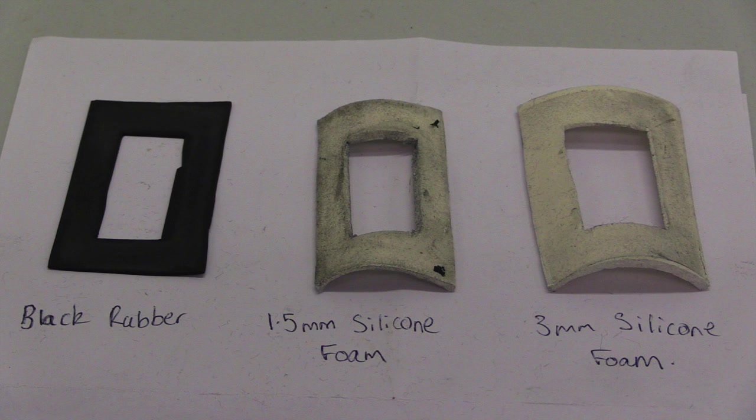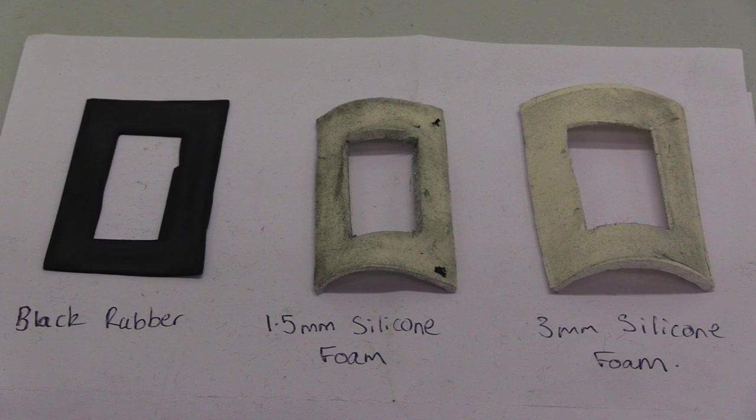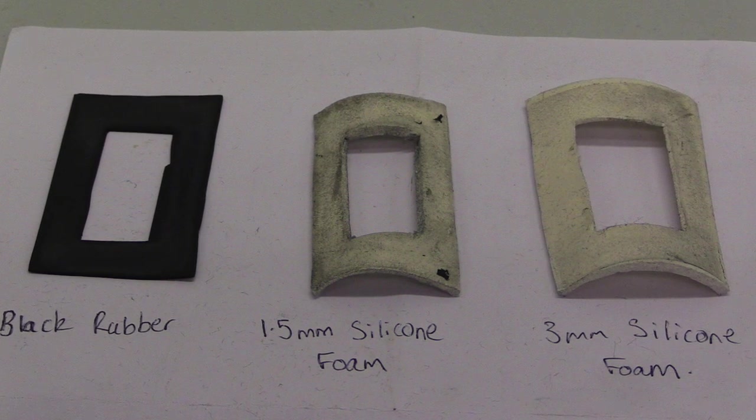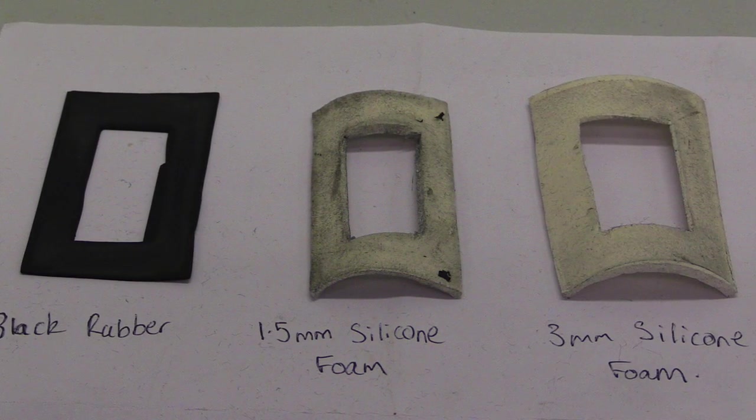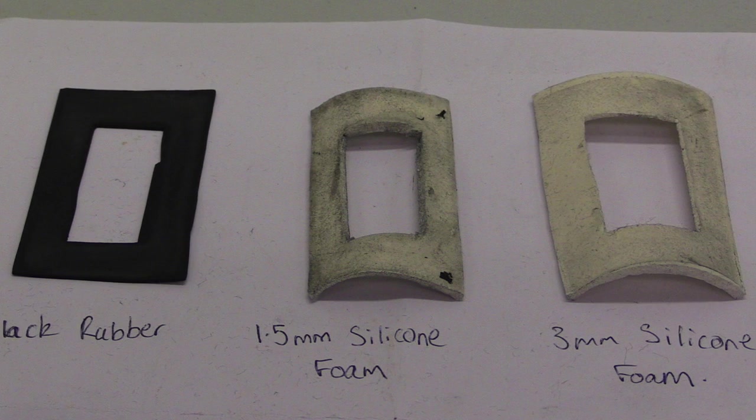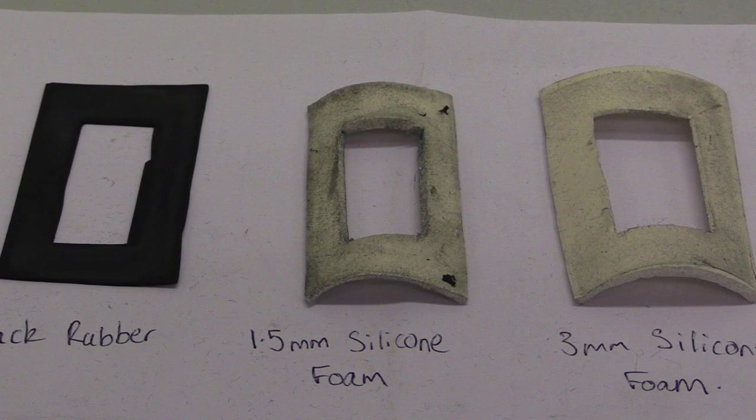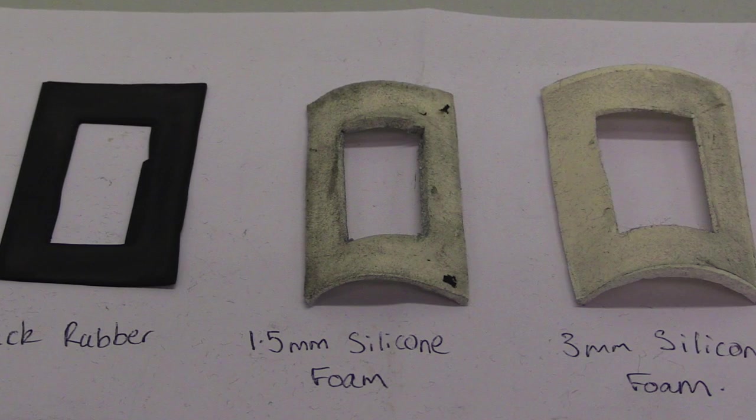Three gasket materials were tested. The first, a simple black rubber, leaked immediately when tested with water. The 1.5mm silicon foam sealed well initially but leaked when left overnight. And the 3mm silicon foam successfully sealed and was used for the rest of the project.